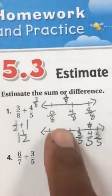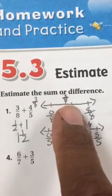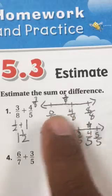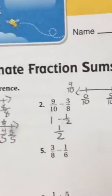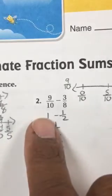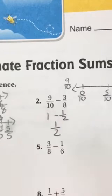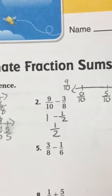We already did 3 eighths in the first problem. And we figured out that 3 eighths was close to 4 eighths, which is 1 half. So for this problem right here, we have $1 minus 50 cent. So the answer would be 50 cent.